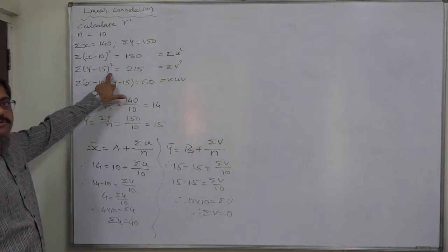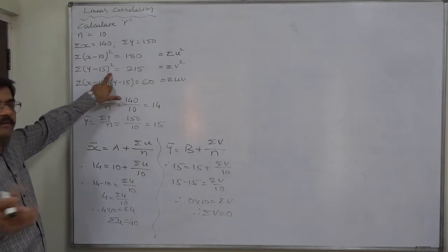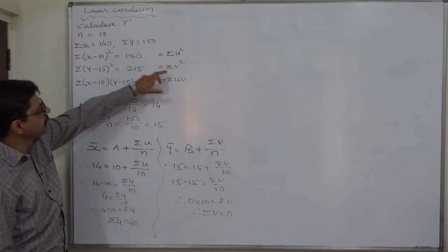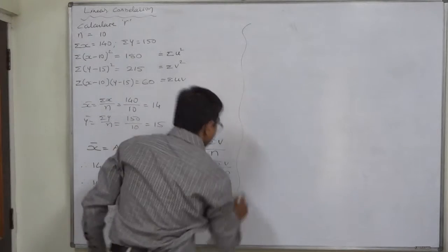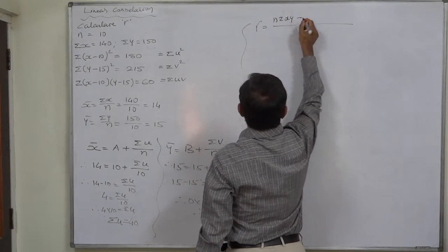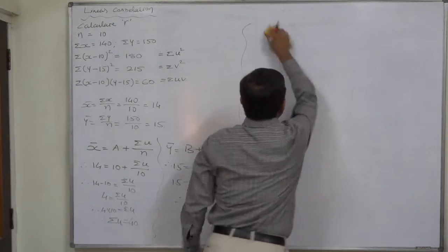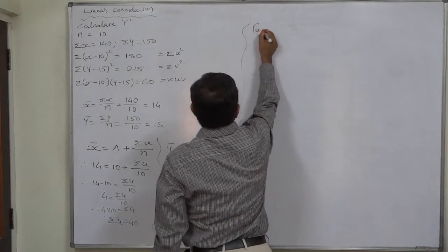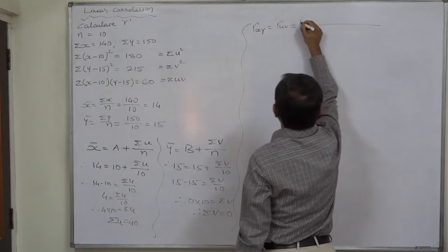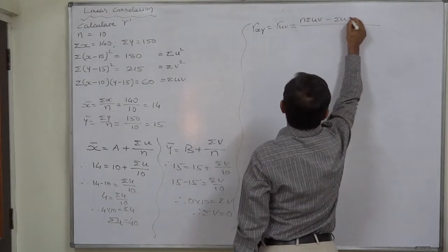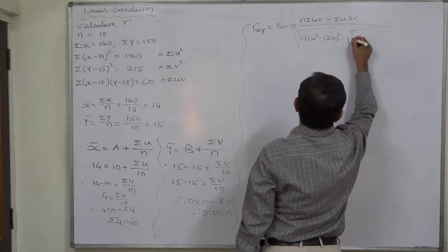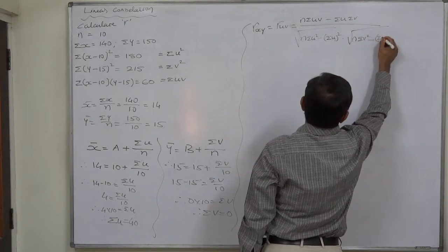Since the assumed mean and actual mean are the same for y, σv is exactly equal to σ(y−ȳ). Now we have all five summations: σu, σv, σu², σv², and σuv, so we can calculate r. The coefficient of correlation between x and y equals the correlation coefficient between u and v: r = [n·σuv − σu·σv] / [√(n·σu² − (σu)²) × √(n·σv² − (σv)²)].